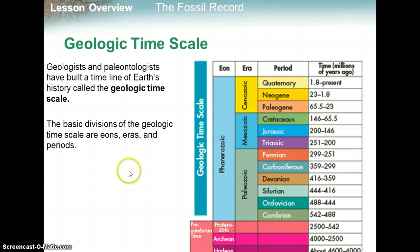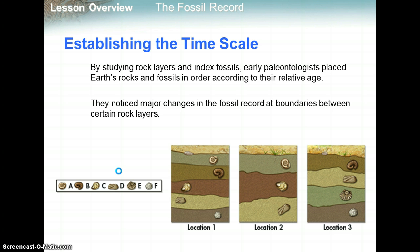This is the geological time scale. Geologists and paleontologists have built a timeline of Earth's history — its basic divisions are eons, eras, and periods. You won't have to memorize this, but you should be able to read from it. For example, the Jurassic period started 200 million years ago and ended 146 million years ago. By studying rock layers and index fossils, early paleontologists placed Earth's rocks and fossils in order by relative age, noticing major changes in the fossil record at boundaries between certain rock layers.